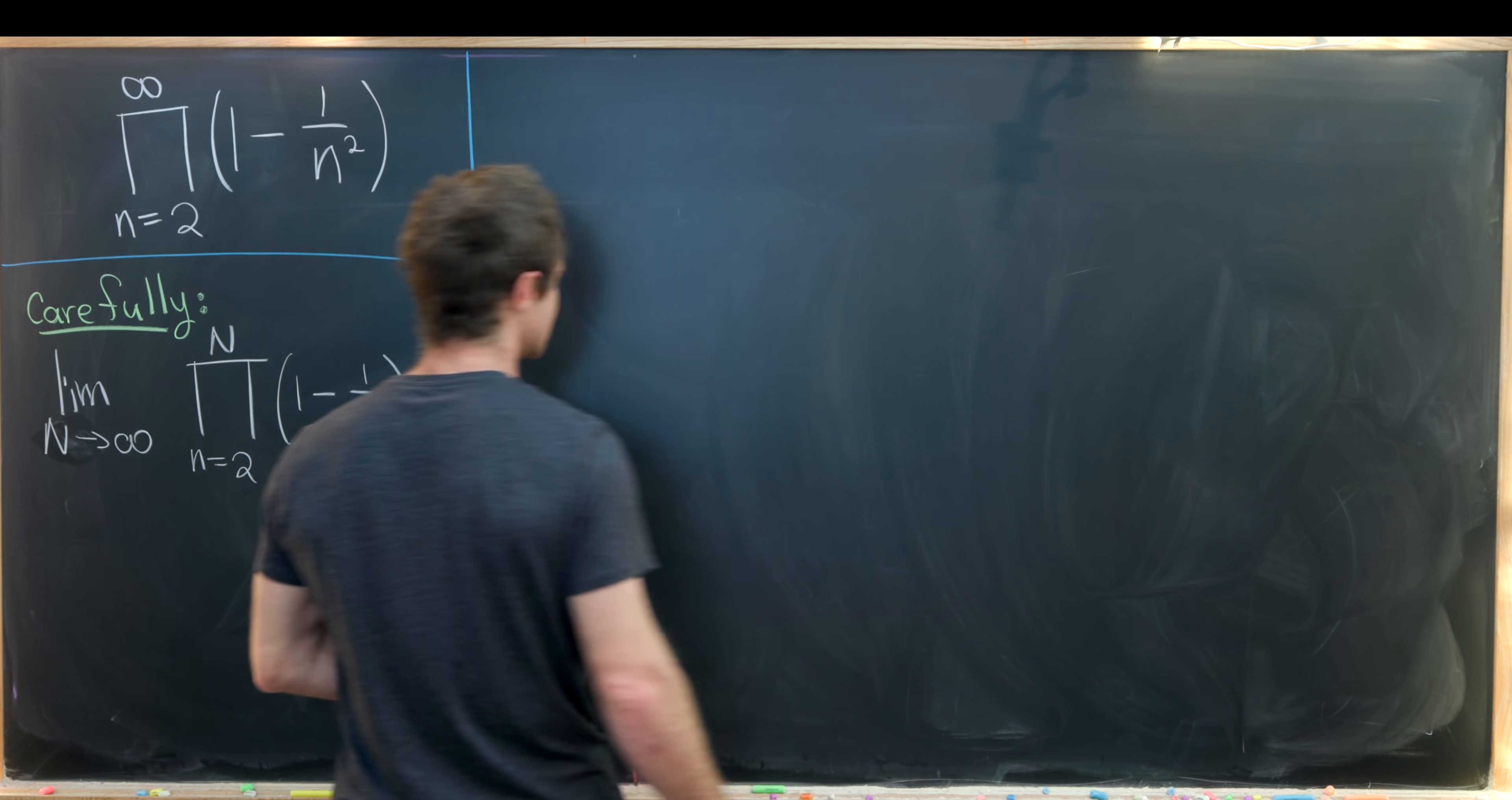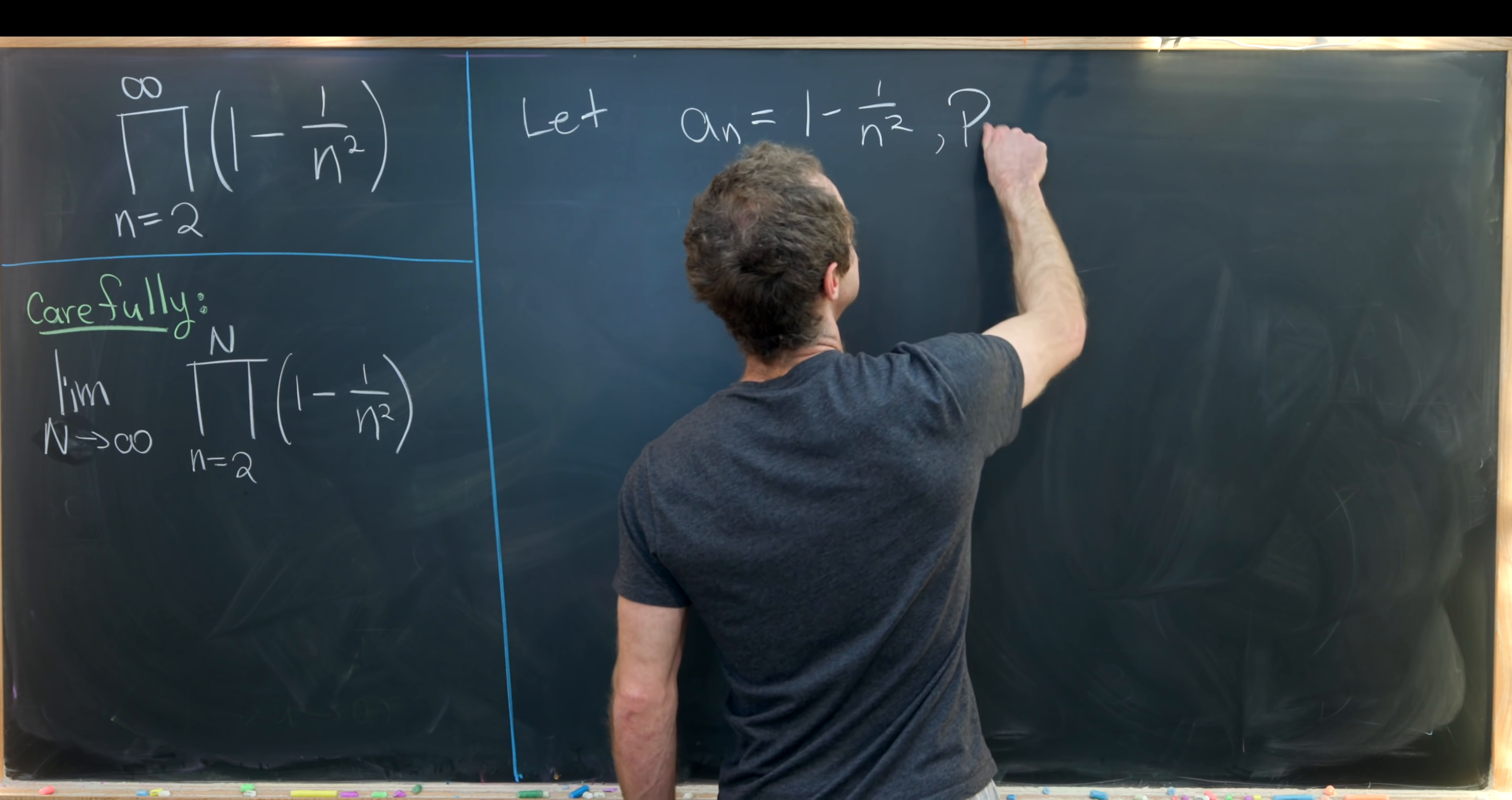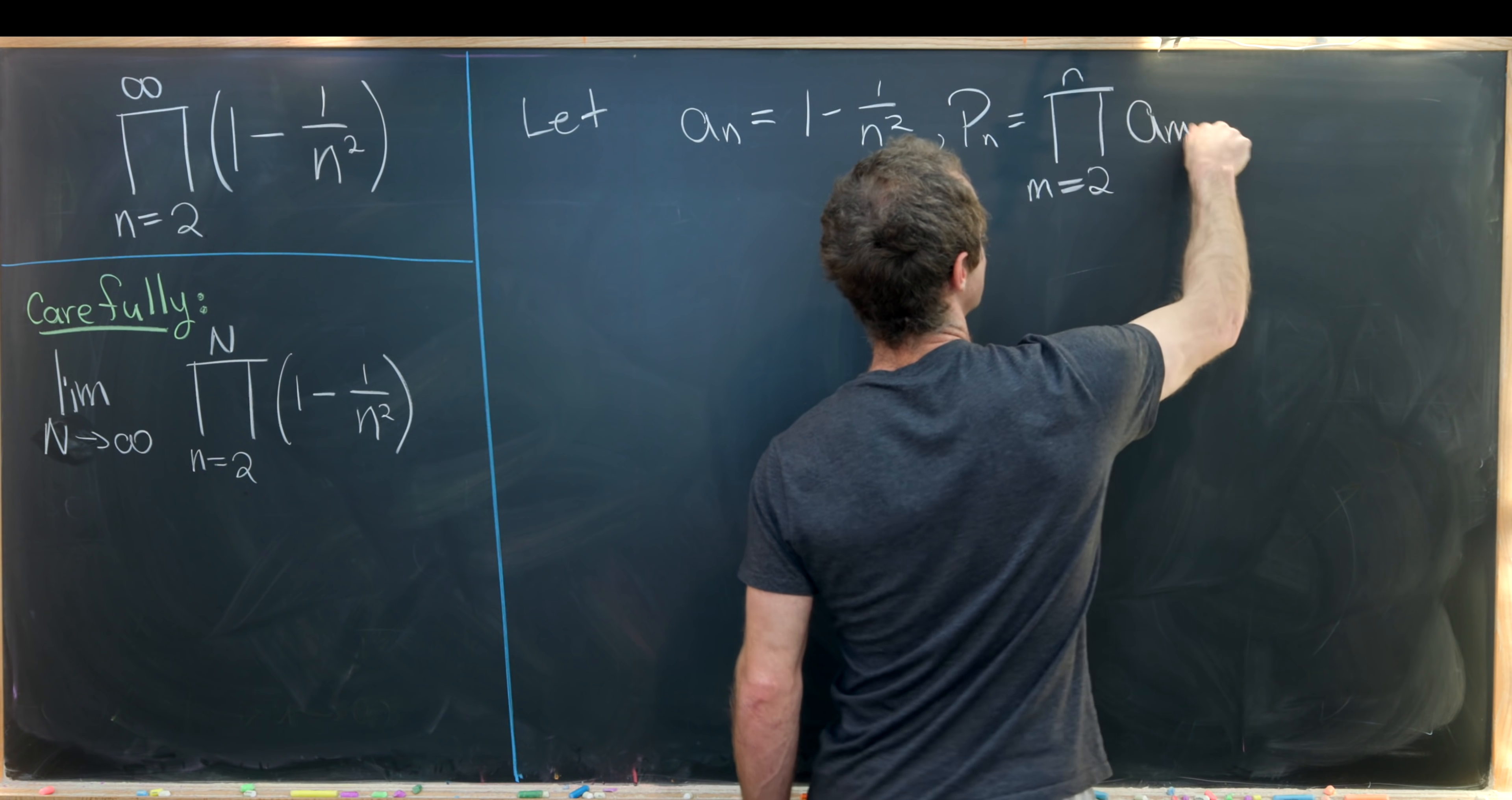So I'm going to introduce a little bit of notation that will make our chart work a little bit better. Let's say a sub n is equal to this 1 minus 1 over n squared term. And then we'll call p sub n equal to the nth partial product. So this will be the product as m goes from 2 up to n of a sub m.